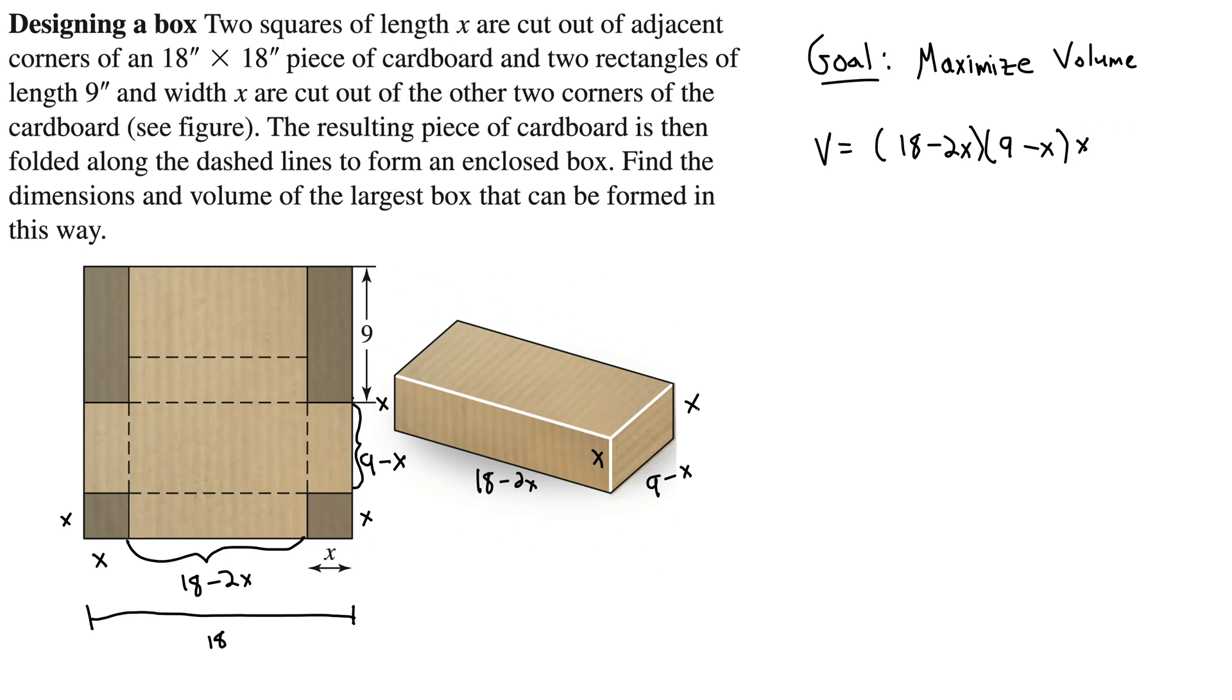So in this example, we essentially took the constraint as part of the problem. So instead of doing base times width times height and all of that, we already took into account the constraint. What's the constraint? Well, this diagram that they gave us was the constraint. So it's already factored in when we do our volume here on the folded up box. So we don't right now need a separate equation to find the constraint because we only have one variable that we're working with. That's the good news.